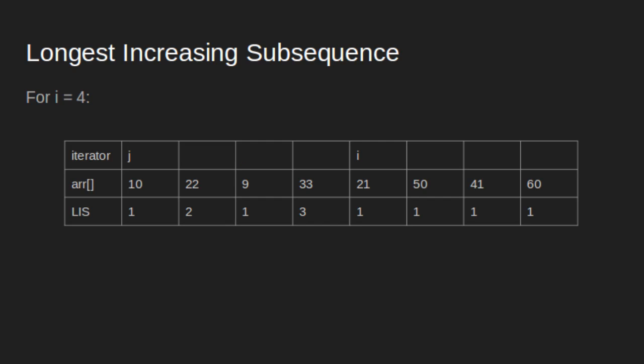For i equal to 4, is 21 greater than 10? Yes. So LIS of i becomes 1 plus 1 equal to 2. Is 21 greater than 22? No, move forward. Is 21 greater than 9? Yes. So LIS of i becomes 1 plus 1 equal to 2. Maximum of 2 and 2 is 2, so we do not change the value. Is 21 greater than 33? No, move forward.